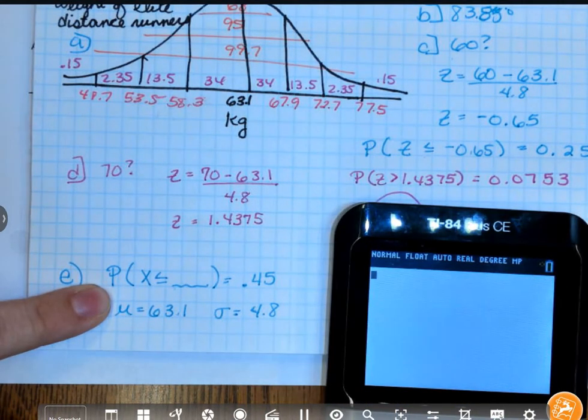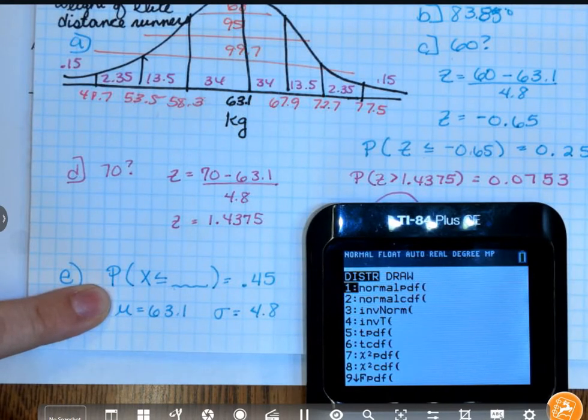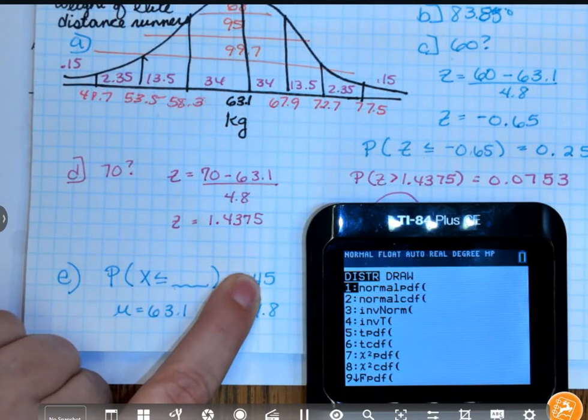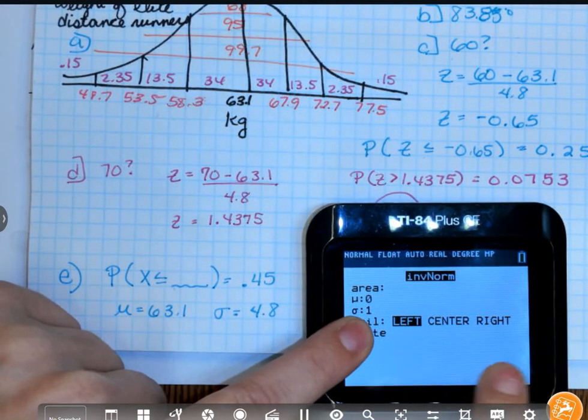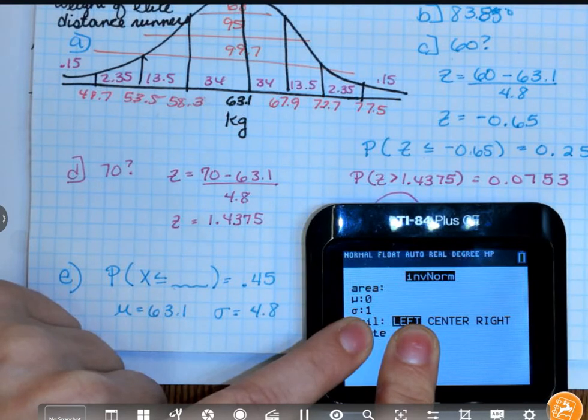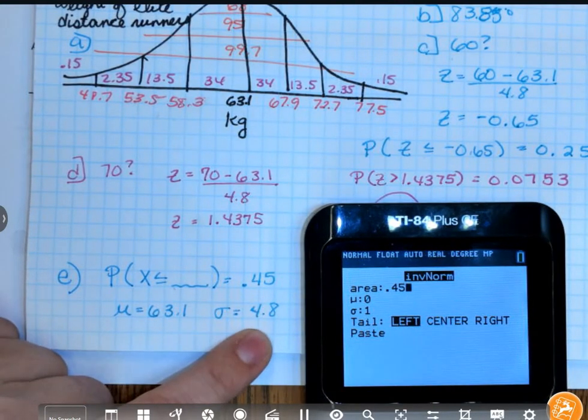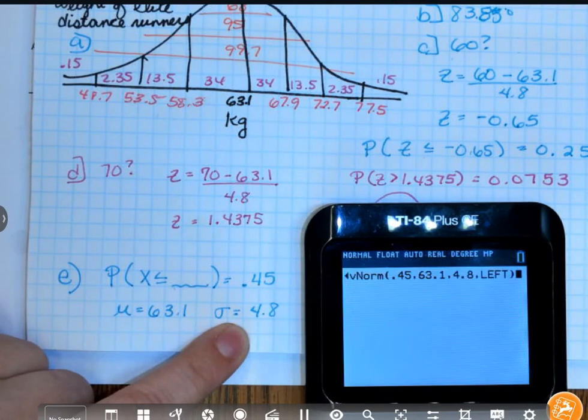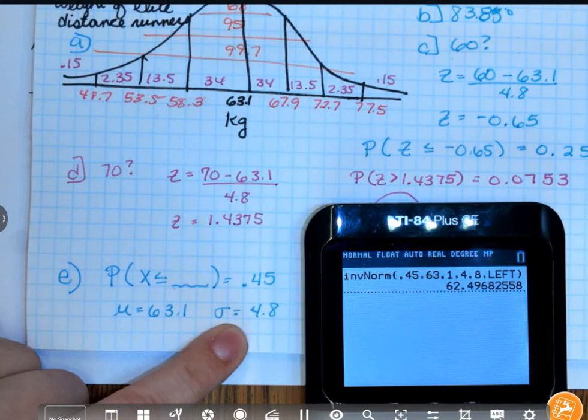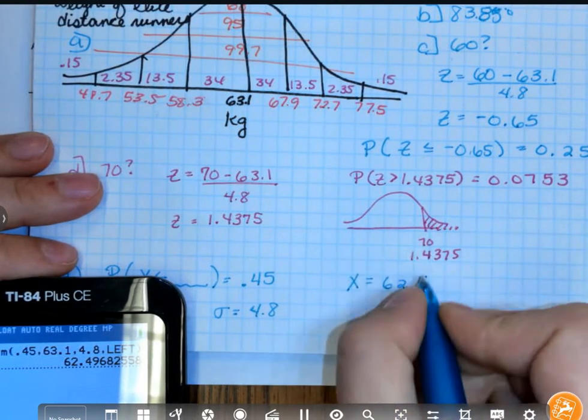This is the work that you would show for a problem like this. And all you would do is you would go to second distribution. No, that's tangent. Second distribution. When I'm given a percent and I'm looking for a probability, use inverse norm. And while my option here says left, center, right, for this class, leave that always on left. That is the one thing. If we're not going to be using our tables, we still have to stick with the idea that it's the area to the left. And so I'm going to say my area to the left is 0.45. My mean is 63.1. My standard deviation is 4.8. And that means to be in the 45th percentile for body weight, I need to have a weight of 62.4, let's do 5.0 kilograms.